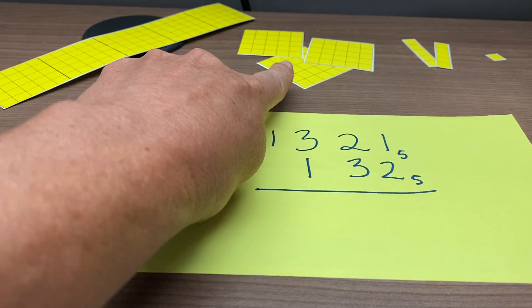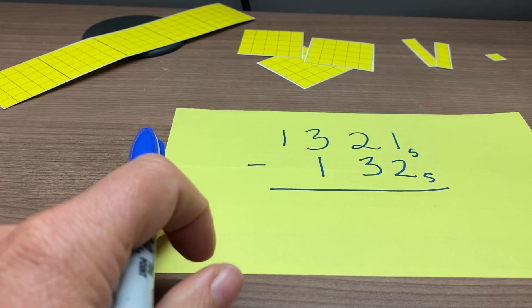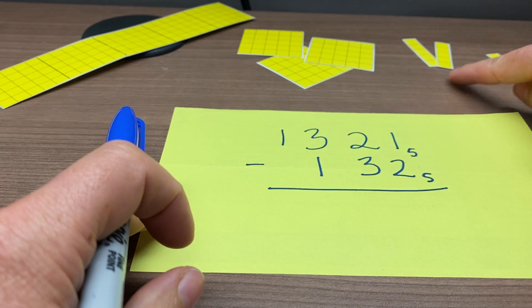So we've got 1, 3, 2, 1. That is our top number, and we're going to try to take away 1 from here, 3 from here, and 2 from here.